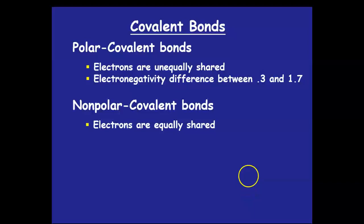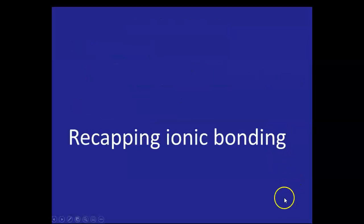In a nonpolar bond, the electrons are equally shared, like between two chlorine atoms in a Cl2 molecule, or between two hydrogen atoms. That's absolute equal sharing. Even if you've got two fluorine atoms making a fluorine gas, that's F2. They both have equal sharing because they're the same atom. The electronegativity difference here is between 0 and 0.3.